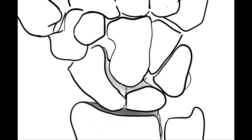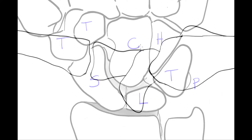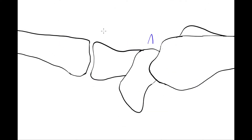The carpal bones are arranged into two rows. In the proximal row are the scaphoid, the lunate, the triquetrum, and the pisiform. The distal row includes the hamate, the capitate, the trapezoid, and the trapezium. In a lateral view, we see that the scaphoid actually spans from the proximal to the distal row.